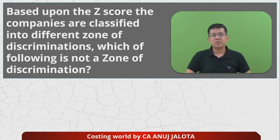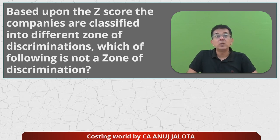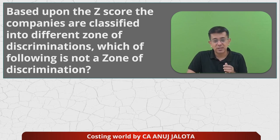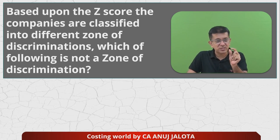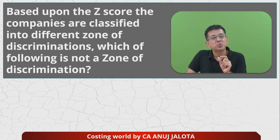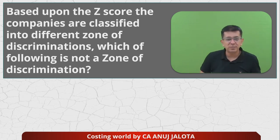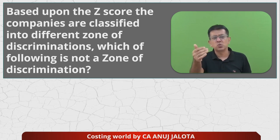Based upon the Z score, the companies are classified into different zones of discrimination. Which of the following is not a zone of discrimination? Now, Z score — let me just remind you for those who have forgotten — these are basically indications of whether a company is doing good or not. If the Z score is low, we say the company is in a danger zone. Based upon the Z score, companies are classified into basically three kinds of levels: are they safe, are they in distress, and so on.